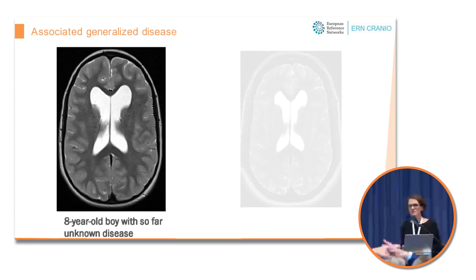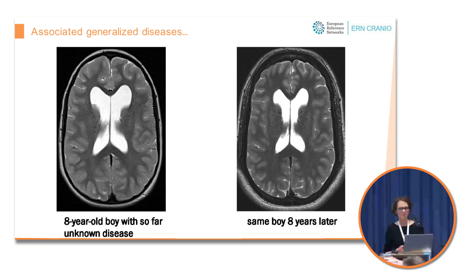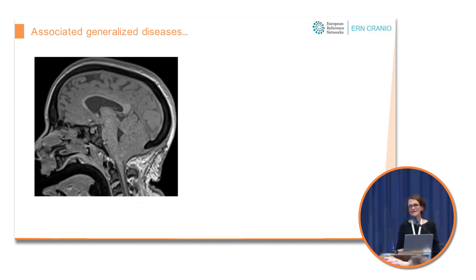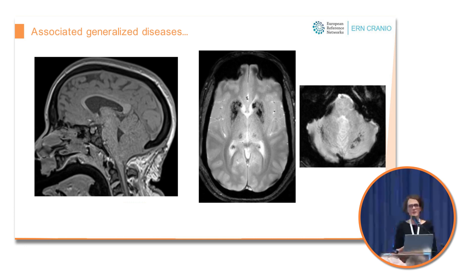Finally, I want to remind you that craniosynostosis can be part of more general genetic or metabolic diseases, as in this boy whose diagnosis we still do not know — his skull gets thicker and thicker and his brain tissue increasingly calcifies. I think these patients may escape the surgeon's eye because they are seen in more general pediatric or neurological consultations, and I believe there is a lot to do.